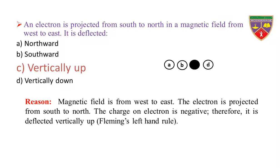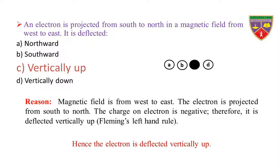Reason: Magnetic field is from west to east. The electron is projected from south to north. The charge on electron is negative. Therefore, it is deflected vertically up by Fleming's left hand rule. Hence, the electron is deflected vertically up.